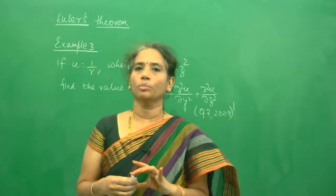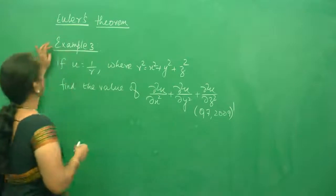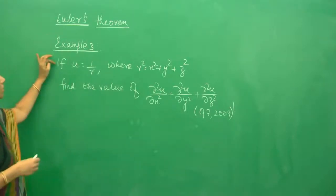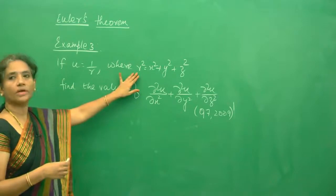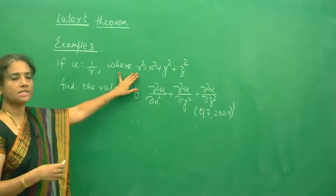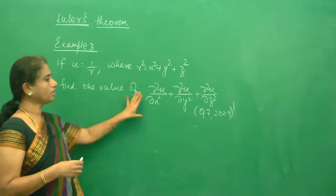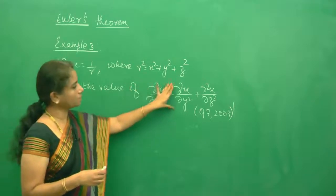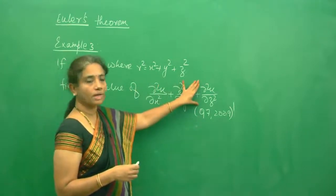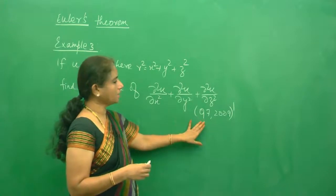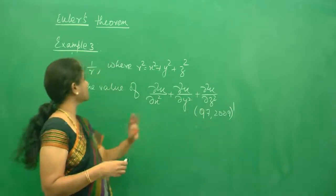Hi everybody, we will do one more problem in Euler's theorem. You are given u = 1/r, where r is x² + y² + z², and you are going to find the value of ∂²u/∂x² + ∂²u/∂y² + ∂²u/∂z². This has come in 1997 and 2009 university papers.